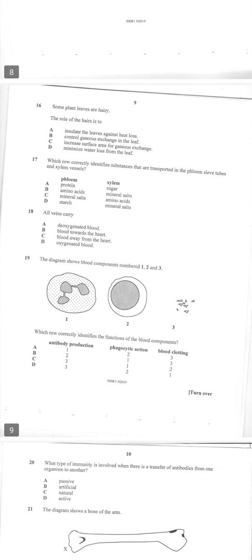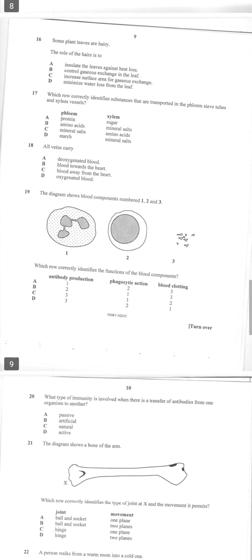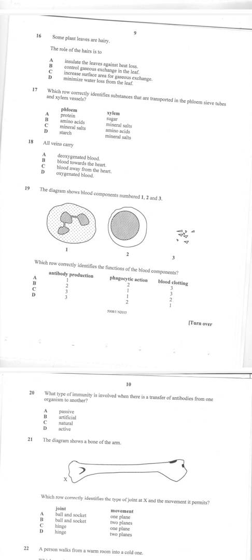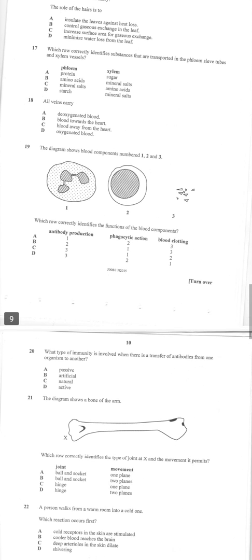Question 16: some plant leaves are hairy. The role of the hairs is to minimize water loss from the leaf. Number 16 is D.